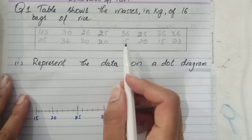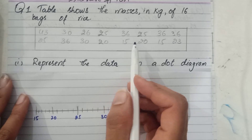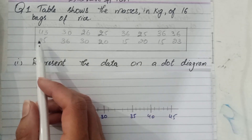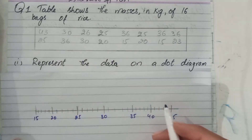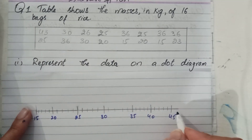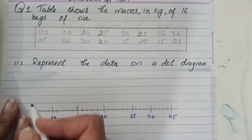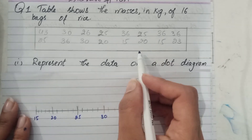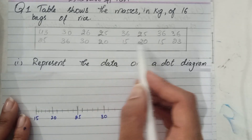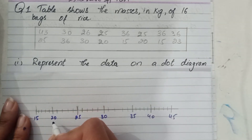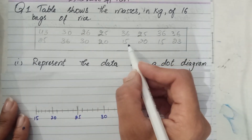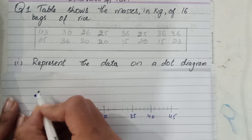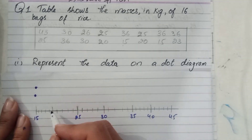We observe from this data that the smallest value is 15 and the greatest is 43. That's why I draw the line from 15 to 45 and I have to represent this data on this line. There are 2 values of 15.